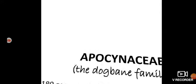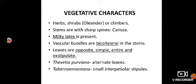Regarding the vegetative characters of Apocynaceae: the plants include herbs, shrubs, trees, and climbers. Herbs — example: Lochnera; shrubs — Nerium and Thevetia (the oleanders); trees — Holarrhena; climbers — Valeris. In some stems, spines are found, for example in Carissa. Milky latex is present — this is a characteristic feature. Vascular bundles are collateral.